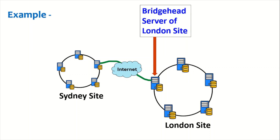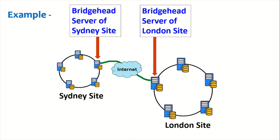One domain controller is the bridgehead server for London, so all the replication from all the London domain controllers is collected by that domain controller and replicated to the Sydney bridgehead server. The replication between the Sydney and London sites is handled between these two domain controllers — that's why they are called bridgehead servers.